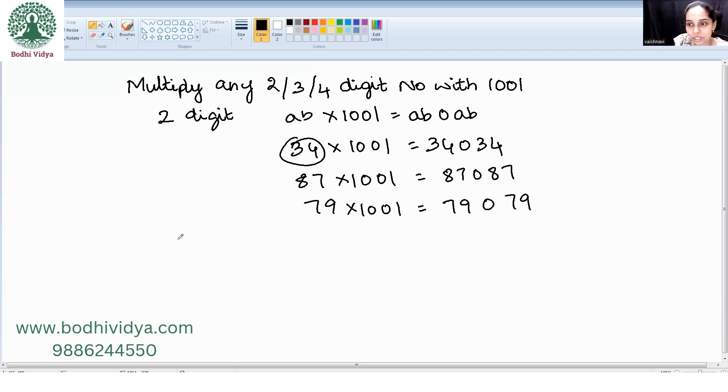Now we will take the case of a three-digit number. It is ABC into 1001. The final answer will be ABCABC. The same three digits are going to repeat.